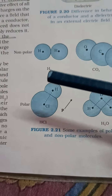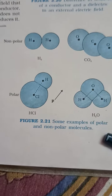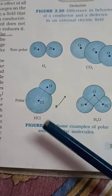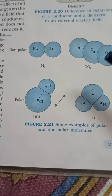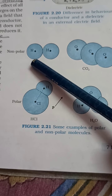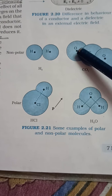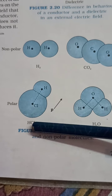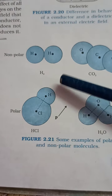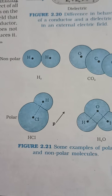Next we can understand how a dielectric works through polar and non-polar molecules. Polar molecules, like HCl and H2O, and non-polar molecules, like hydrogen and carbon dioxide, you must have studied in chemistry. In this, a polarization effect is produced, which we will study in detail in the next lecture. Thank you.